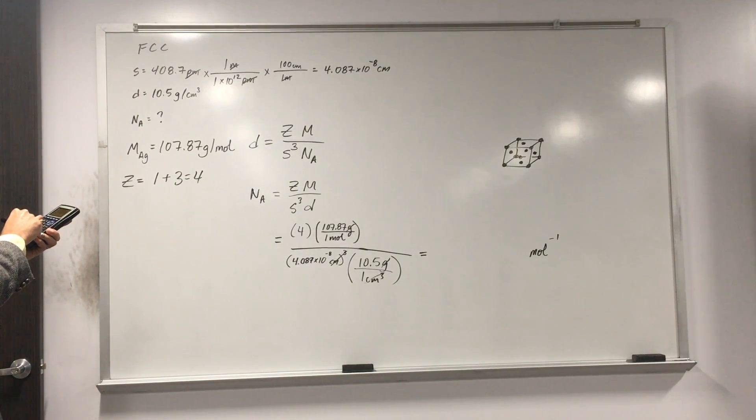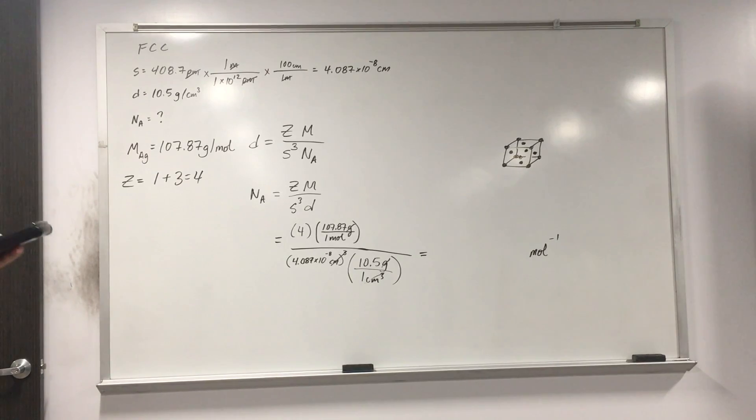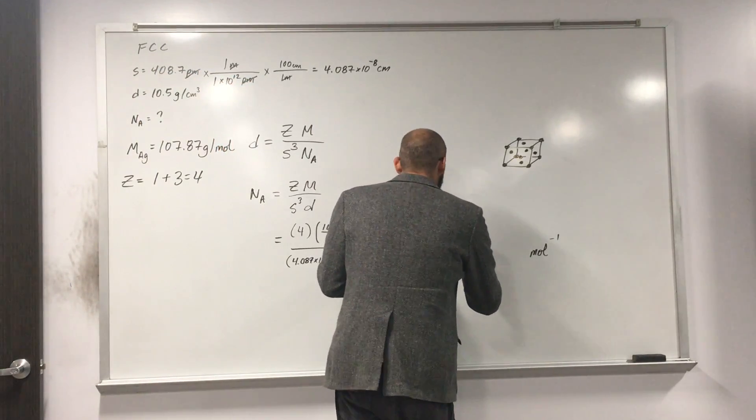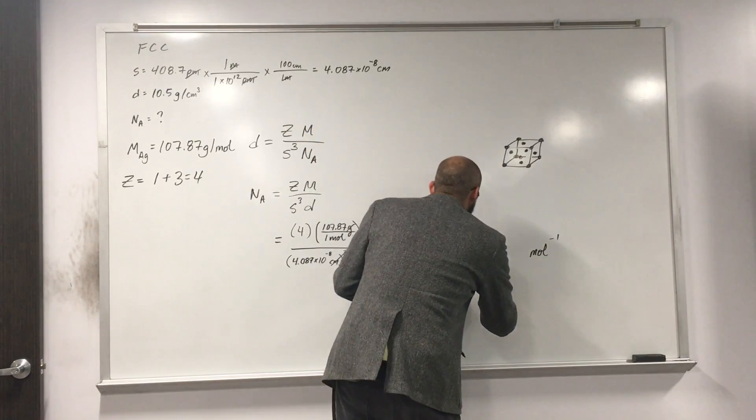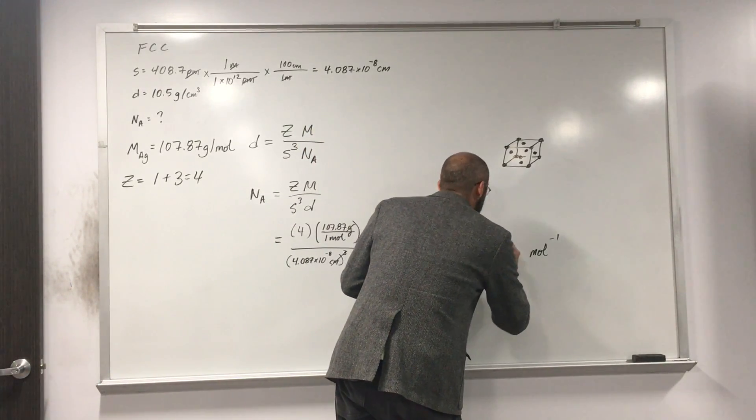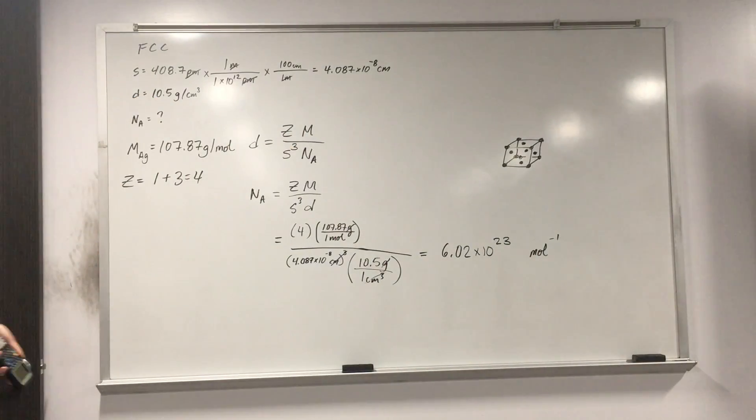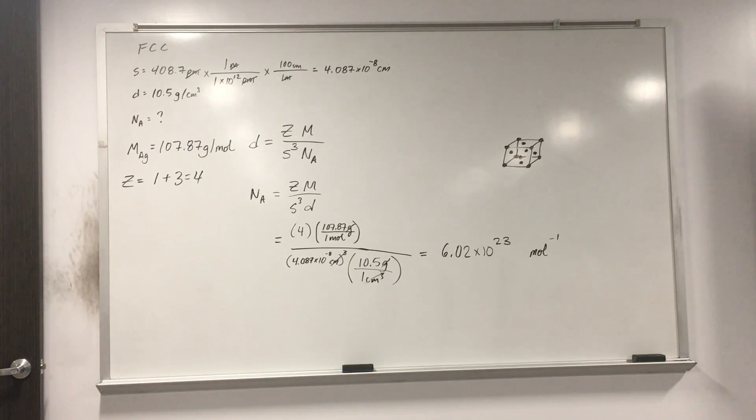I'm going to get my calculator out and hopefully get it right. So I encourage you to do it with your calculators and make sure that you can use your calculator appropriately. So 4.087, I like to start there because that's what I'm going to cube. Multiply that by 10.5 and then take 4 divided by that answer. Multiply that by 107.87. So hopefully we get something close to Avogadro's number. And I got 6.022 times 10 to the 23rd per mole.